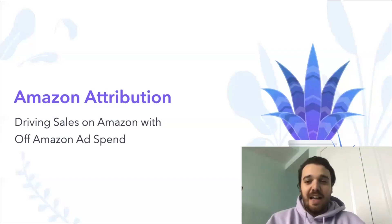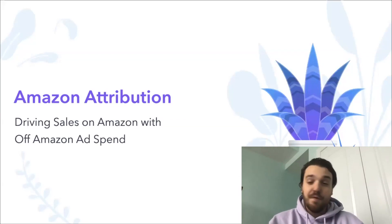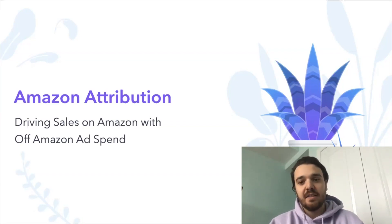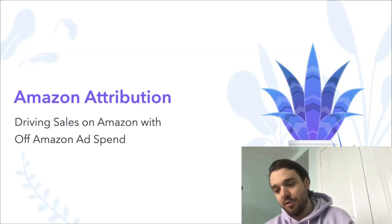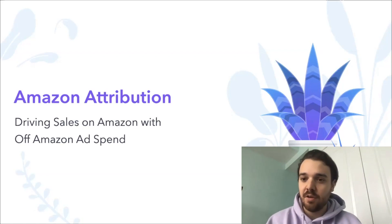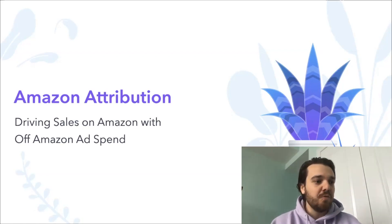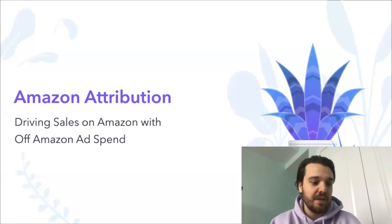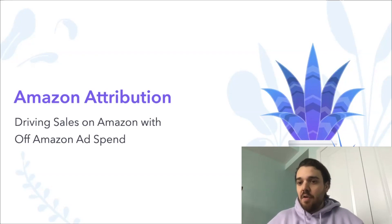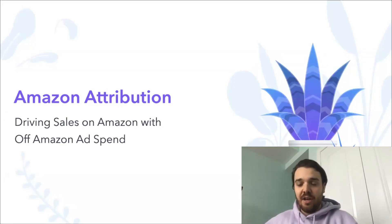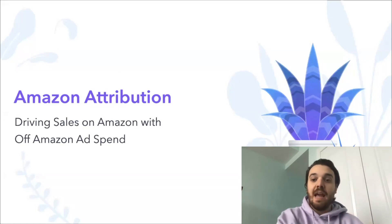Amazon Attribution has been a big topic for a long time. For everybody who runs ads on Facebook, Google, Pinterest, or TikTok and drives that traffic to their Amazon store or listing pages, you don't really get to see exactly what happens once they click your ad. What Amazon Attribution does in its simplest form is allow you to understand how your off-Amazon advertising spend is impacting your Amazon performance.